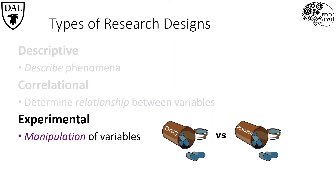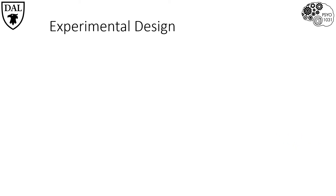Unlike the other research designs, the experimental method allows for the manipulation of specific variables. Experimental design allows you to ask the question, does x cause y? For example, does sugar cause hyperactivity in children? In an experiment, the researcher manipulates one or more variables and measures others, while attempting to control for all other factors. By controlling the environment, it ensures that the only difference between the groups is a difference in the variable of interest.